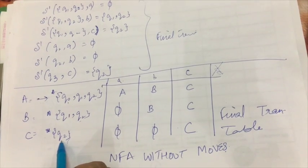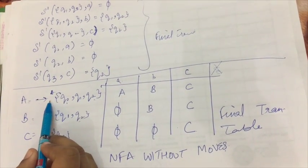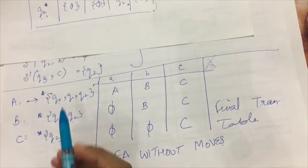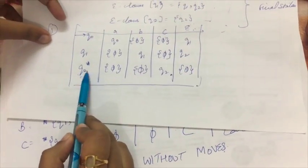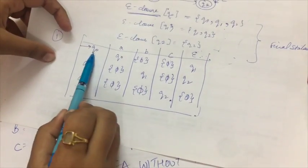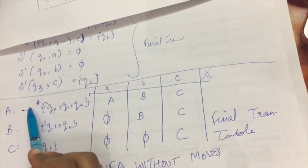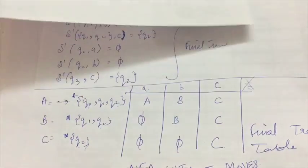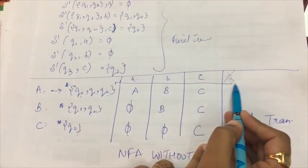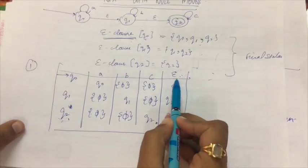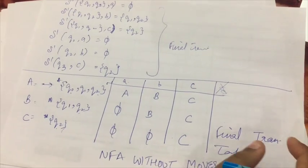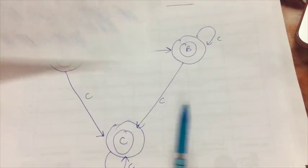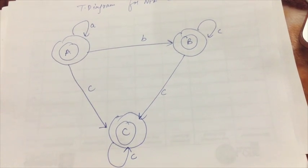Regarding the star and arrow markings: we check the initial transition table — whichever new state contains Q2, the final state, becomes a final state in the new NFA. Whichever new state contains Q0, the initial state, gets the arrow marking as the starting state. We make the final transition table, which has no null column, and then make the corresponding transition diagram. We have successfully converted the NFA with null moves to an NFA without null moves. Thanks for watching.